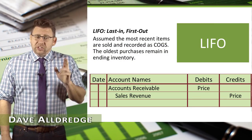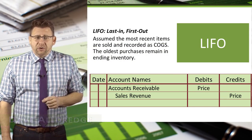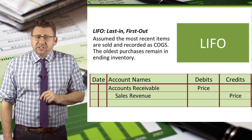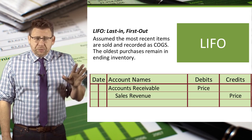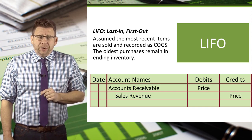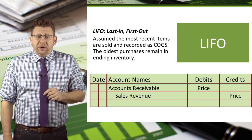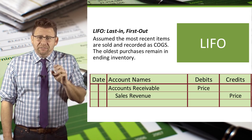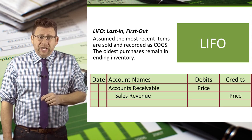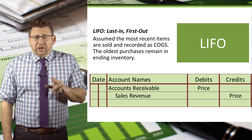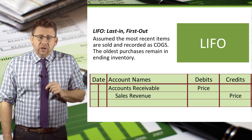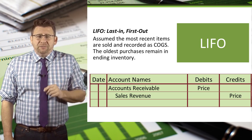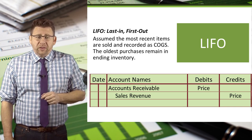LIFO Inventory Valuation, which stands for Last In First Out, results in the most recent purchases being recorded as cost of goods sold and the oldest purchases remaining in ending inventory. Under the Periodic Inventory Tracking System, we don't track the purchase and sale of inventory through the inventory account, so the revenue entry is all that is recorded when the sale occurs. Therefore, cost of goods sold and ending inventory valuation are determined only at the end of the month.